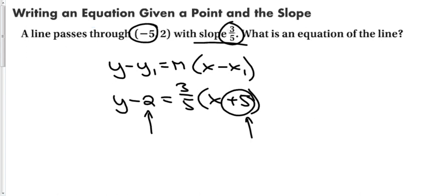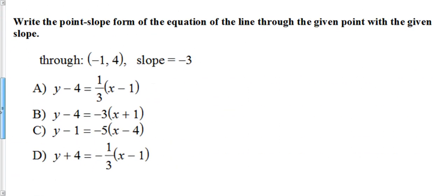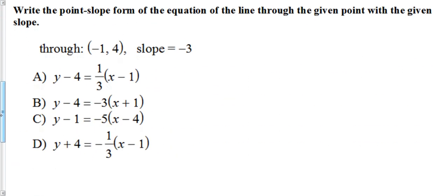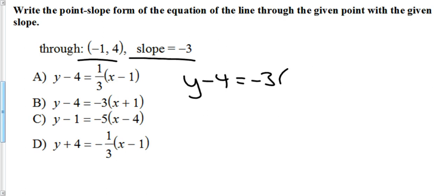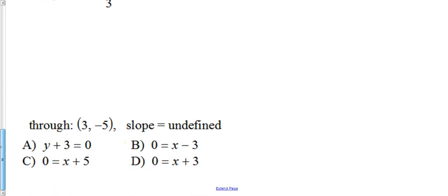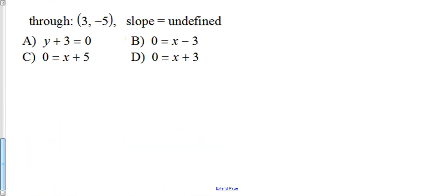For a quick example: given a point and a slope, we set up y − y₁ = m(x − x₁). Plugging in gives y − y₁ = −3(x + 1), and looking at the answer choices, the answer is B.